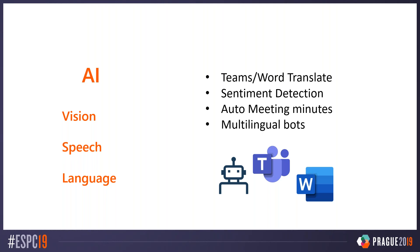Another example is sentiment detection, which is part of cognitive services where you can use a text and the cloud tries to detect the sentiment of the message. We use it for service desk — we can automatically detect whether a request is friendly or contains harsh words. There's also auto meeting minutes: the capability to generate automatic meeting minutes from a Teams meeting because a bot is listening to it.